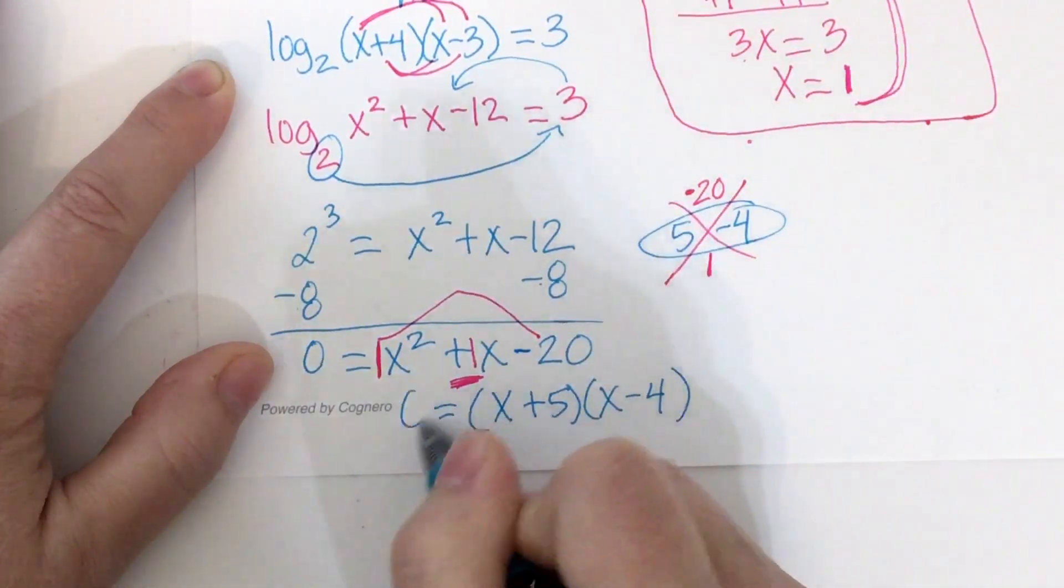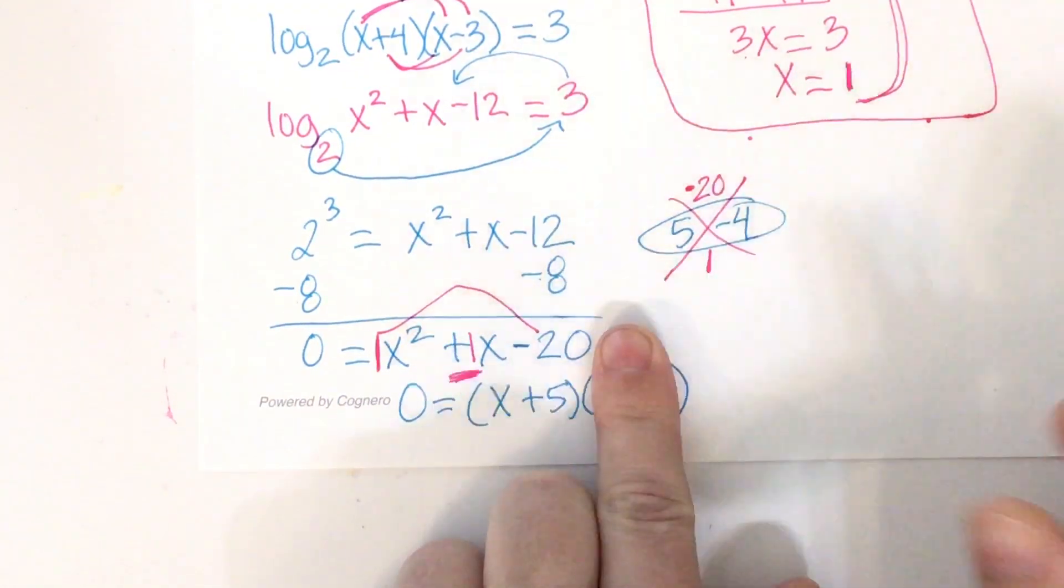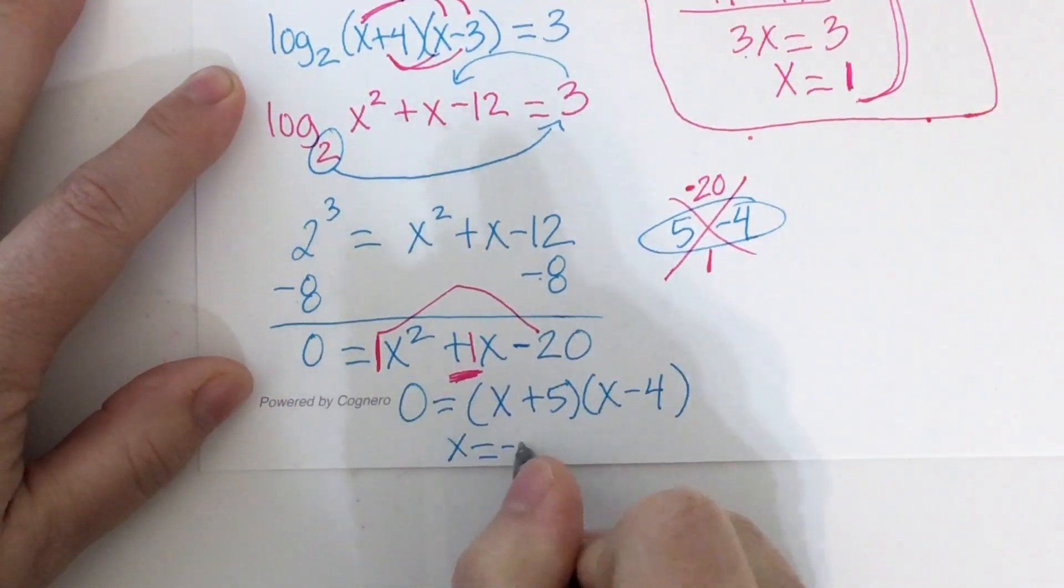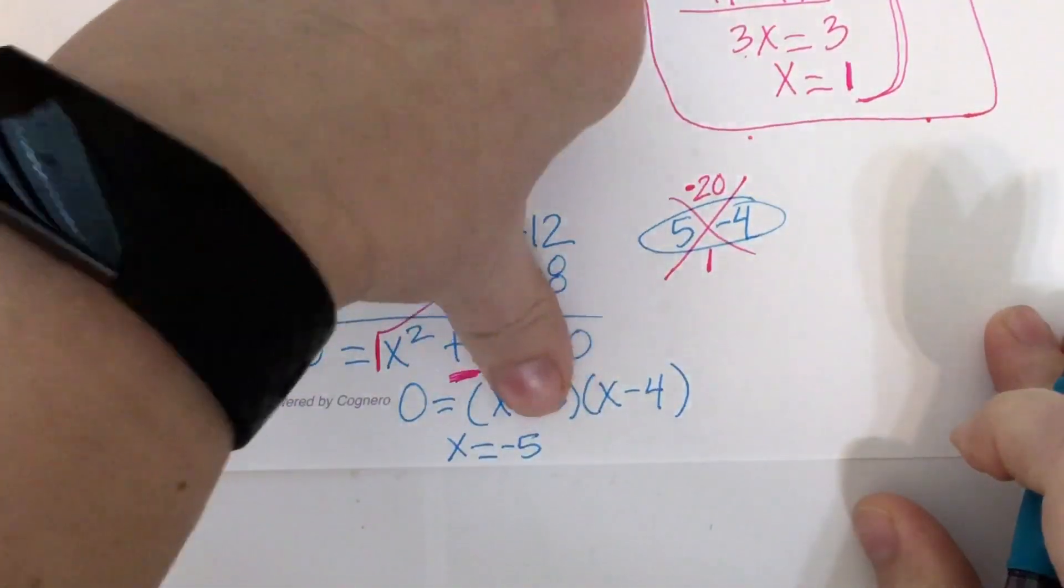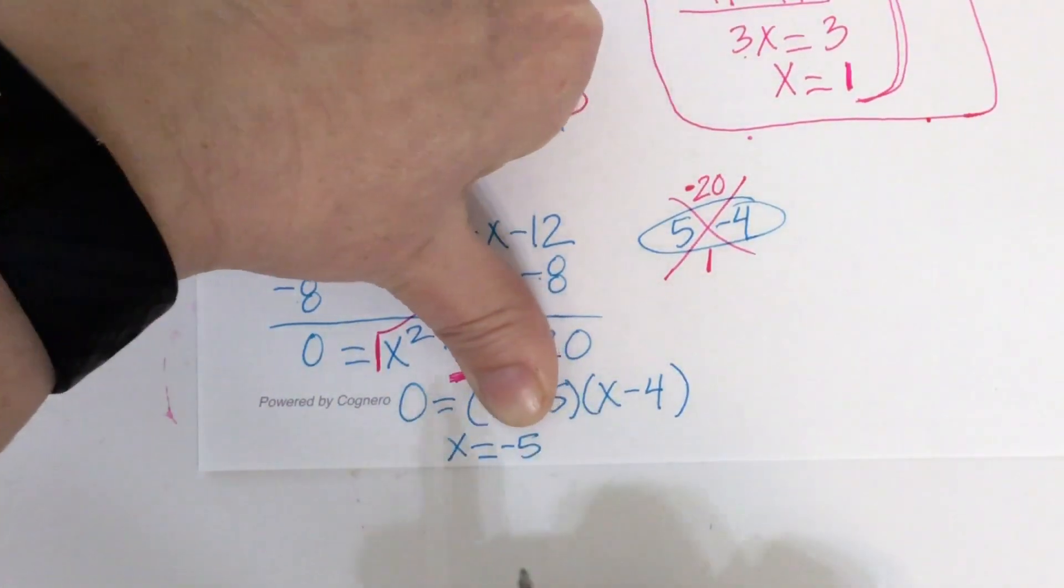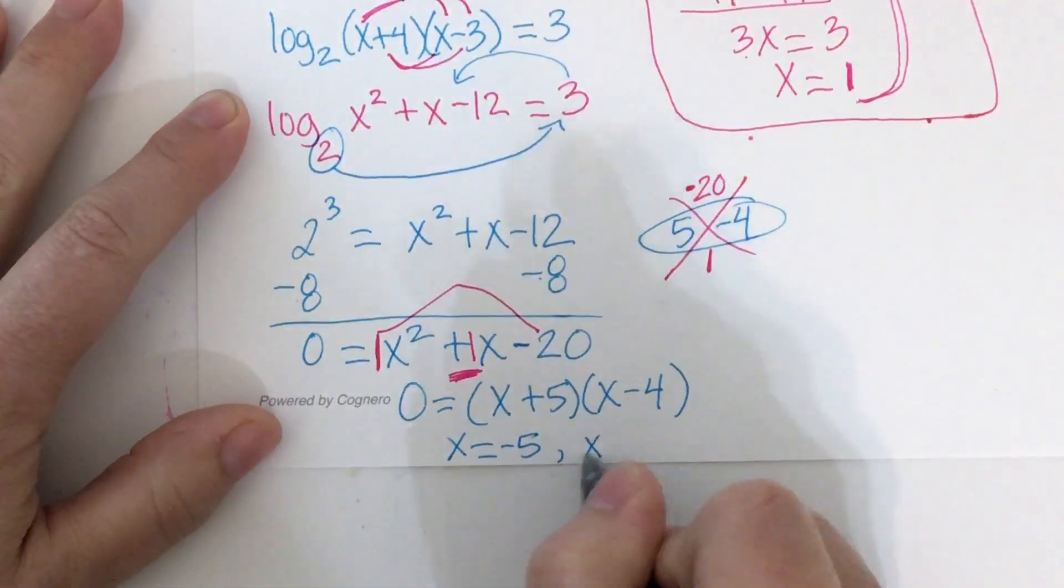And then I have to solve. So if you set x plus 5 equal to 0, what would you get if you solve that equation? Negative 5. Because you'd subtract 5. And what would you get if you set x minus 4 equal to 0 and solve that equation? Positive 4. Because you would add 4.